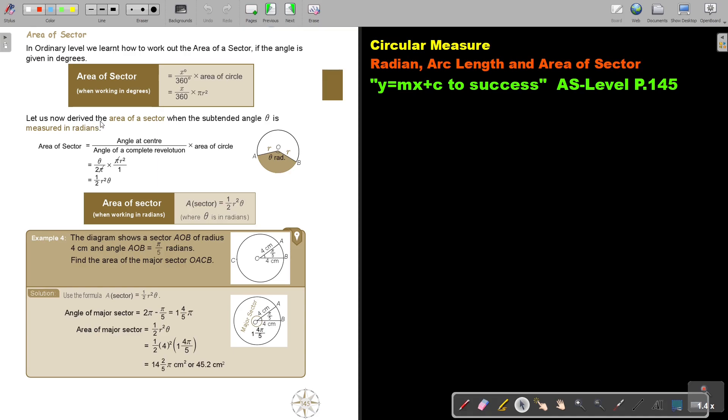So let us now derive the area of a sector when the subtended angle theta is measured in radians. So it's angle at the center over the angle of a complete revolution, which is 2π not 360, multiplied by πr². So the π's cancel and what is left is a half r squared theta.